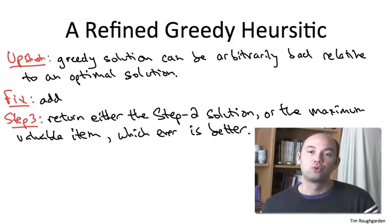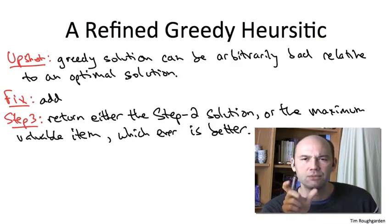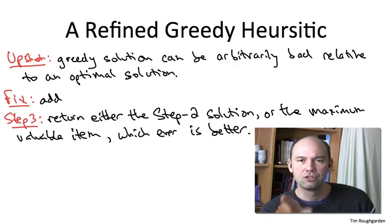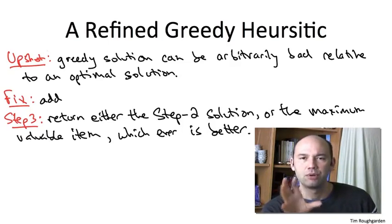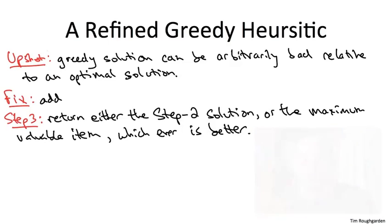In other words, this new greedy algorithm, it just runs the old one, but then it does a final sanity check. It looks at each item individually, and it says, well, if this item just by itself dominates the solution I've computed thus far, I return this single item by itself instead.